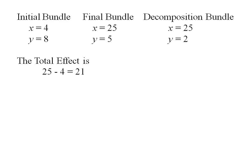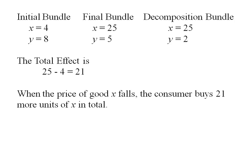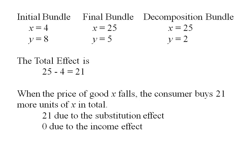The total effect is that final bundle, 25, minus the initial bundle, 4. So the total effect is 21. Of this 21, 21 is due to the substitution effect and 0 is due to the income effect.